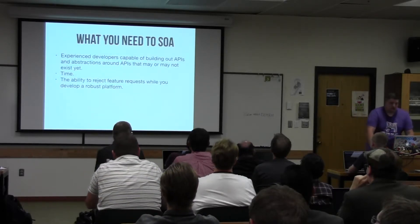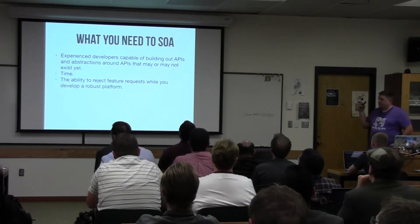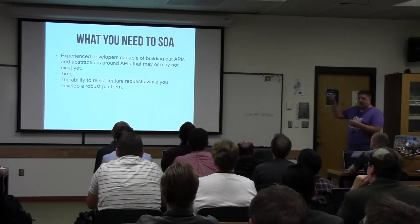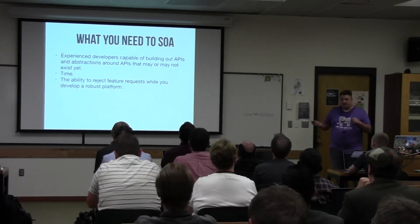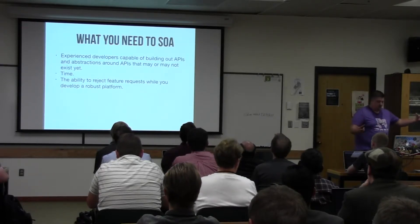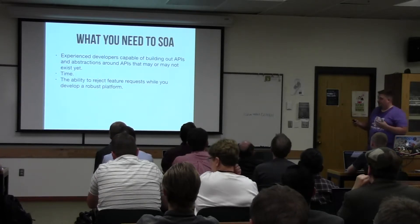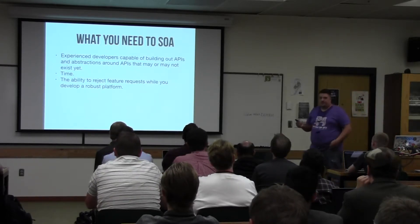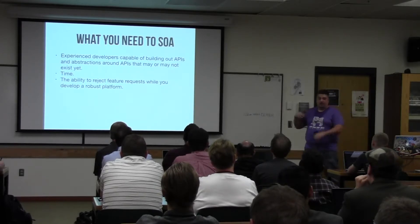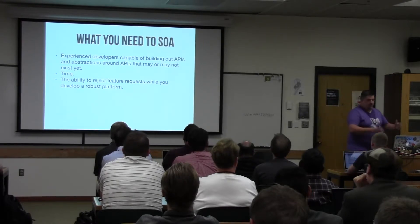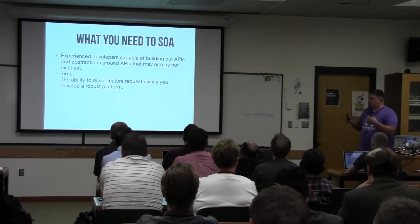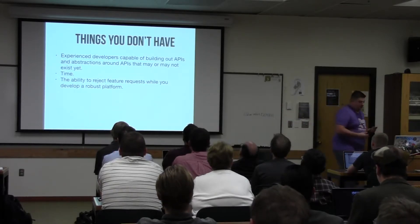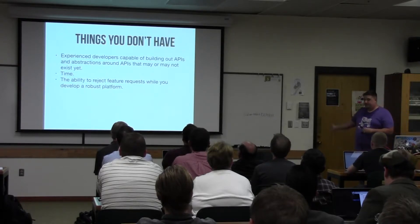What do you need in order to do service-oriented architecture? You need experienced developers capable of building APIs and dealing with concepts in an abstract fashion. Without that, you're not going to succeed quickly. You need time — it's not easy to go look at a system that's 10 years old and extract one concept. And finally, you need the ability to reject feature requests. Trying to build a robust service platform while still adding a whole bunch of new features means three-month timelines become 12-month timelines. It's too complicated to do both at the same time.